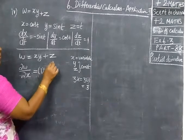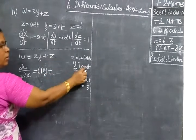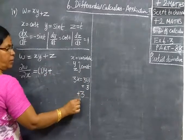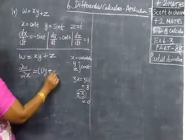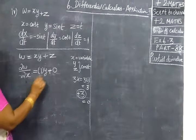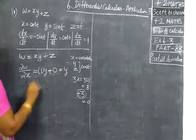So, this is what you write. 3 into 1 equal to 3. In that way you are writing, y is treated as like 3. Then plus, this one is constant. So the differentiation is 0. So in that way it is 0. So equal to y.